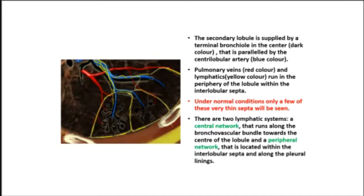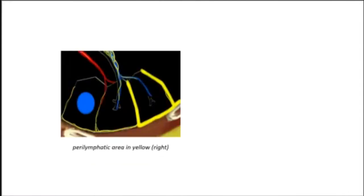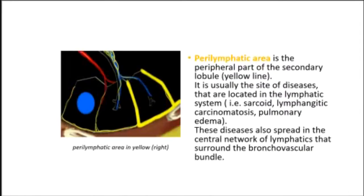The centrilobular area is the central part of the secondary lobule. It is usually the site of diseases that enter the lung through the airways — such as hypersensitivity pneumonitis, respiratory bronchiolitis, and centrilobular emphysema. The perilymphatic area is the peripheral part of the secondary lobule, usually the site of diseases located in the lymphatic system — such as sarcoidosis, lymphangitic carcinomatosis, and pulmonary edema.